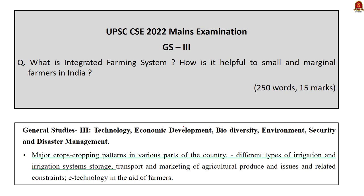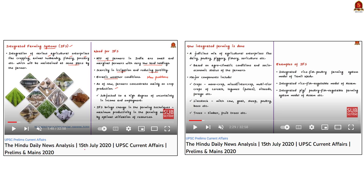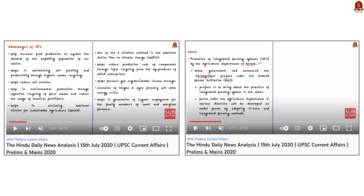Question number 14 in GS Paper 3: 'What is an integrated farming system? How is it helpful to small and marginal farmers in India?' We covered everything about integrated farming systems in our 15th July 2020 Hindu News Analysis — what it is, the need for it, how it should be done, and the advantages associated with it. All these points can be incorporated in your answer.